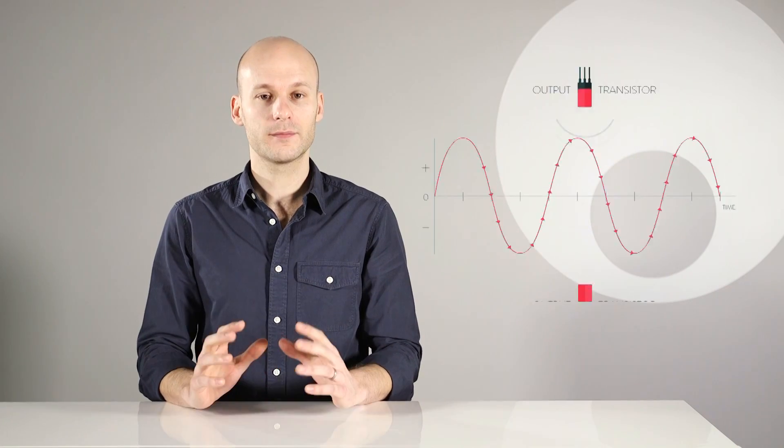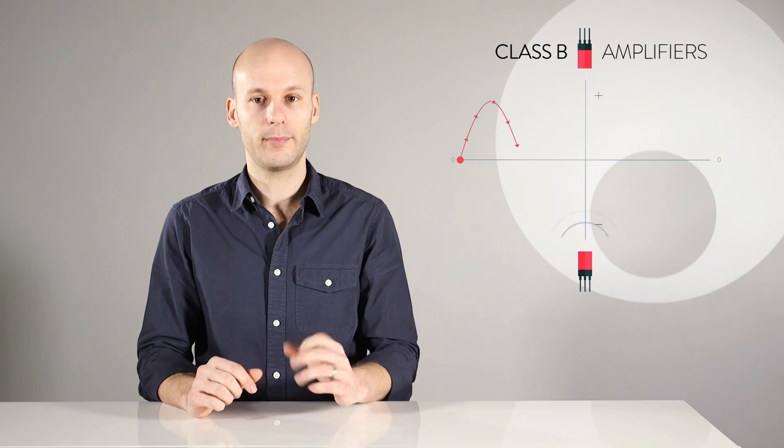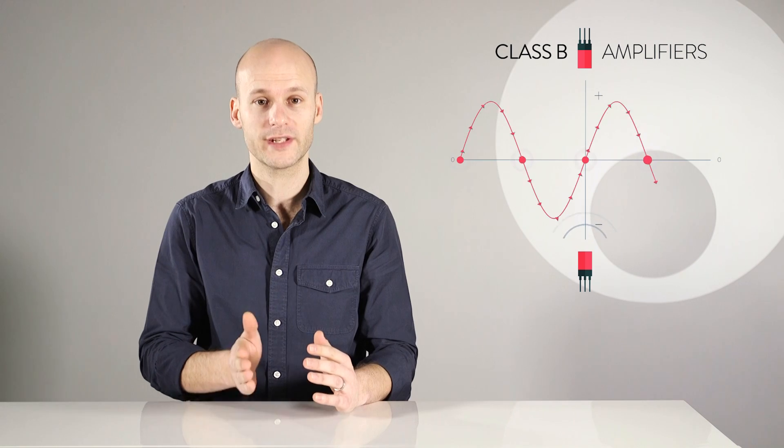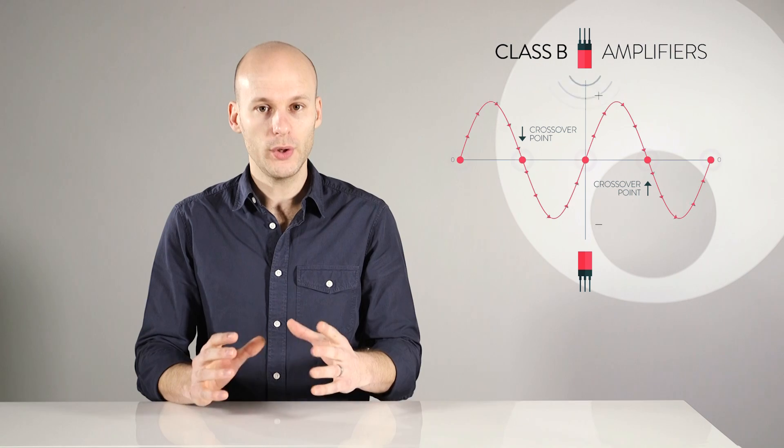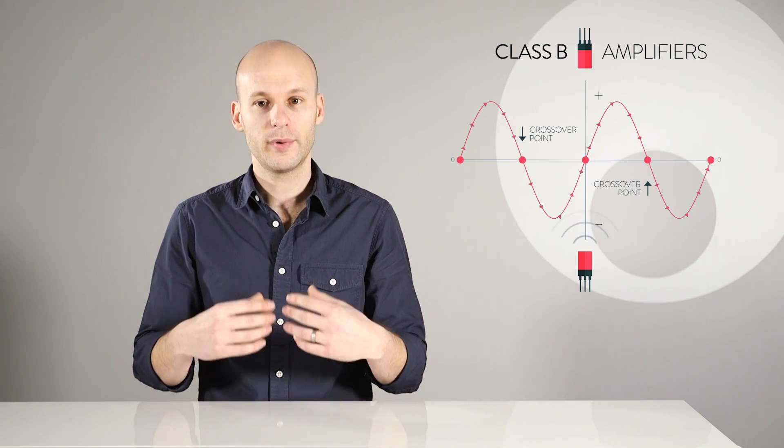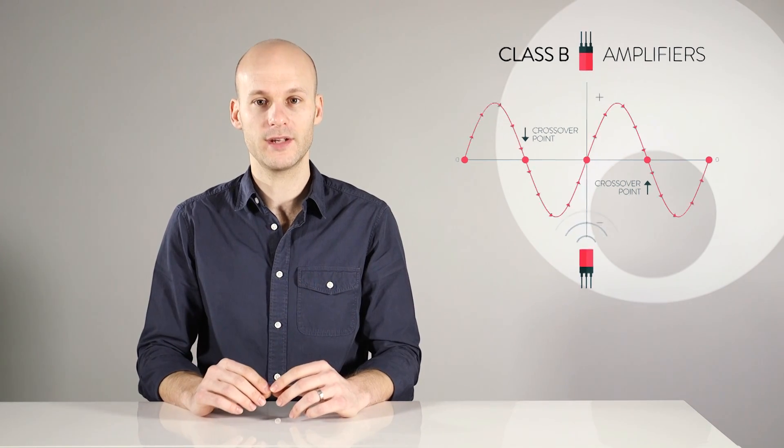The problem with a Class B amplifier is that each time the current is switched from positive to negative, it is reduced to zero before crossing over. This is known as the crossover point. At this point, both of the output transistors are in their off positions, before one of them switches back on to receive the current from the other side.